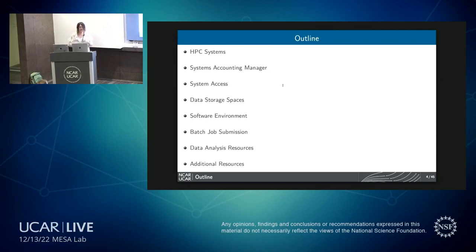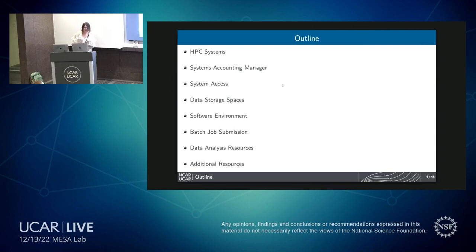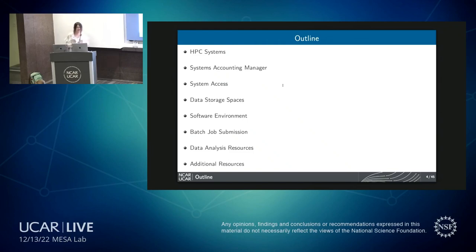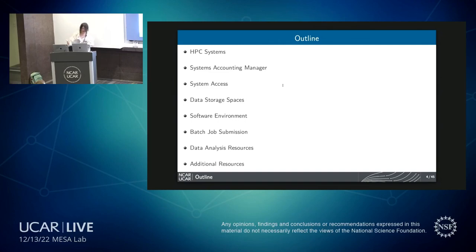We have a ton of topics to go through today. Here's a general outline: first, the NCAR HPC systems, specifically Cheyenne and Casper, plus a quick introduction to Gust and Derecho. Next, the system account manager, system access, data storage spaces, data transfer, the software environment, batch job submissions, and briefly, data analysis.